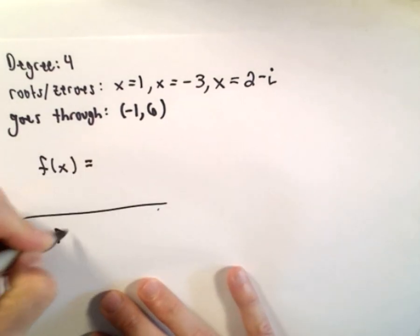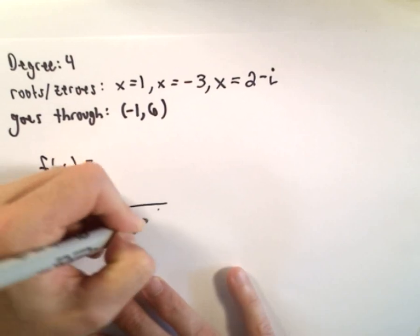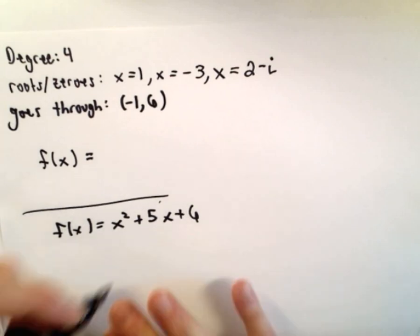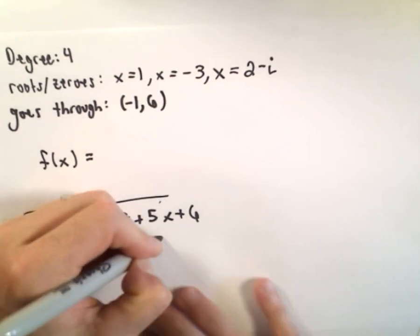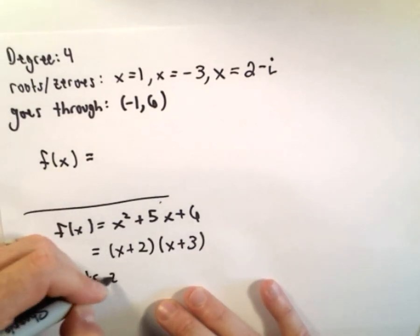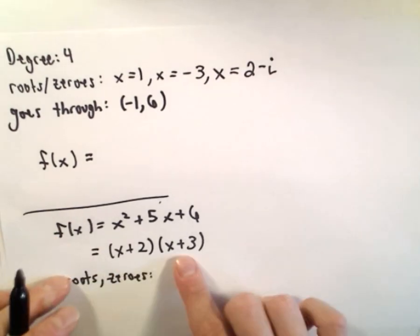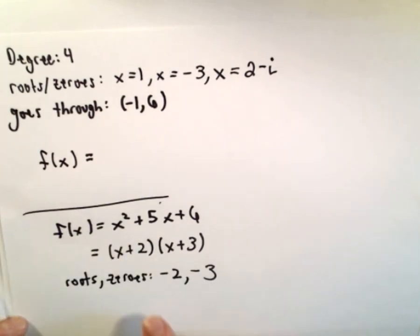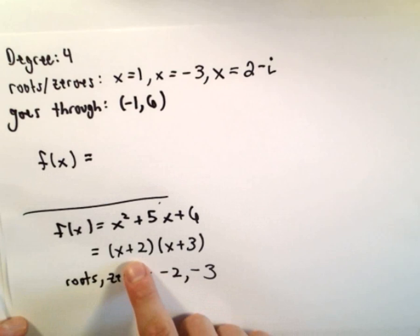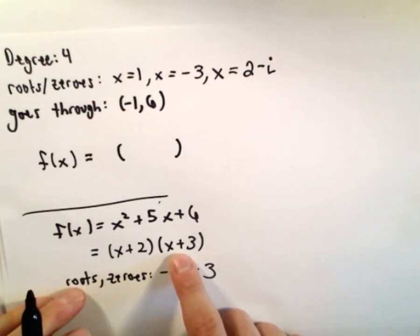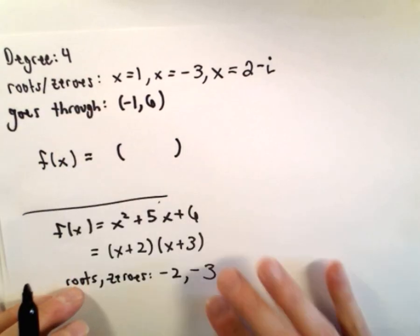Let's do a quick example — this is maybe stuff you already know. Suppose you had the polynomial f of x equals x squared plus 5x plus 6. That factors as x plus 2 and x plus 3. The roots or zeros are found by setting each factor equal to zero, giving us negative 2 and negative 3. So the idea is, if you know a root, you know what one of the factors is going to look like.